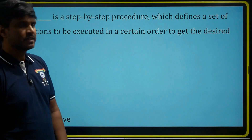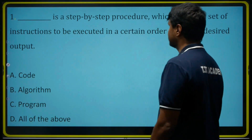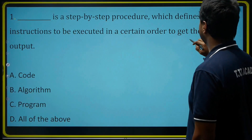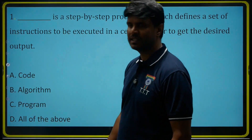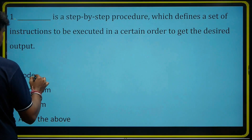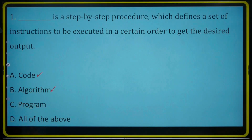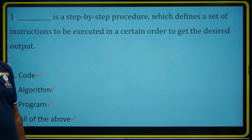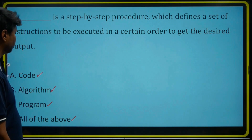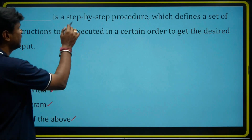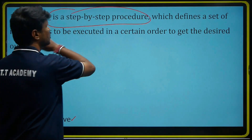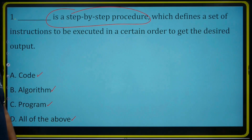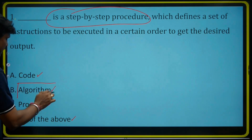What are the questions we have? The dash is a step-by-step procedure which defines the set of instructions to be executed in a certain order to get output. Here we have four options: one is code, next is algorithm, next is program, and the last one is all of the above. In simple words, algorithm is a step-by-step procedure. So the correct answer is algorithm.